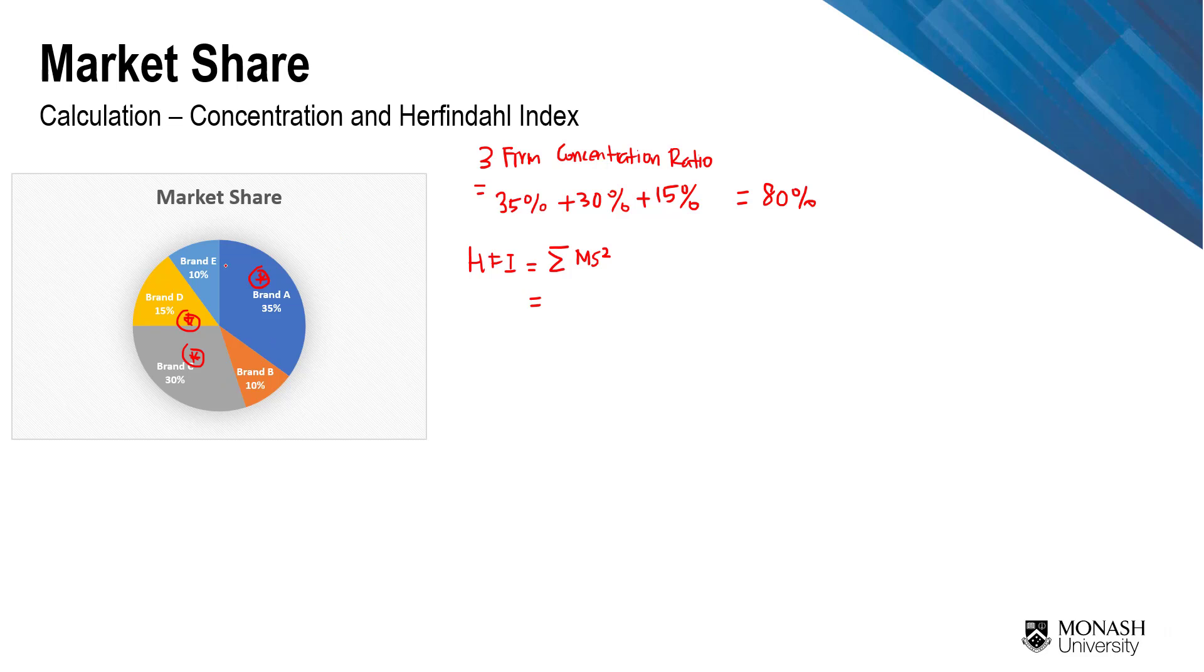So we got 5 market shares from different brands that we have to add up. So the first one is 35% and that's squared, plus 10% squared, plus 30% squared, plus 15% squared, plus 10% squared.